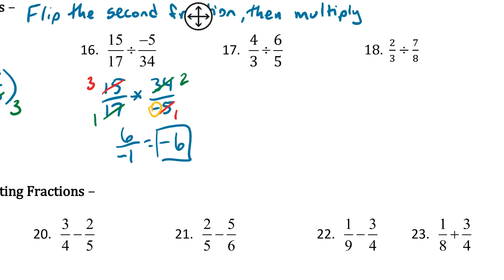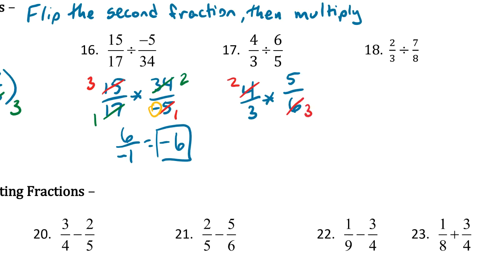Next: 4 thirds divided by 6 fifths. We're going to flip the second and multiply. 2 goes into 4 twice and 2 goes into 6 three times. I don't see anything else to reduce. Top times top is 10, bottom times bottom is 9. And we're done.